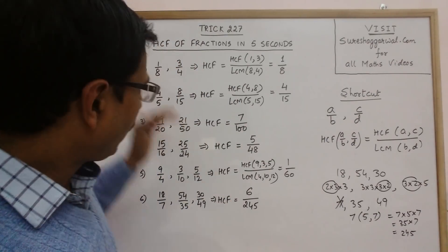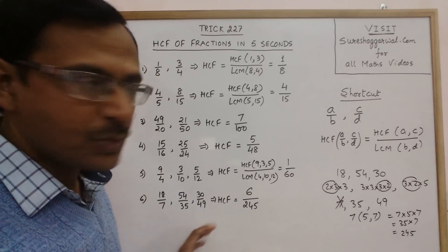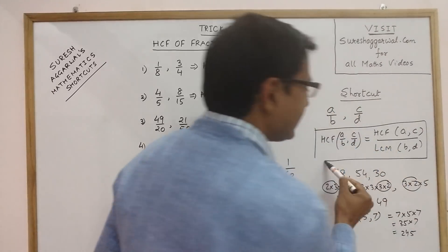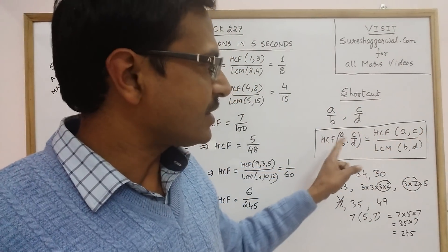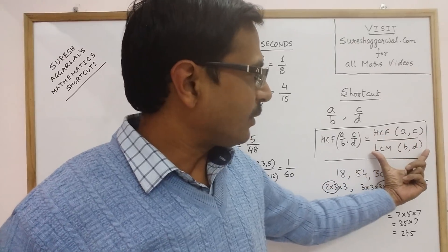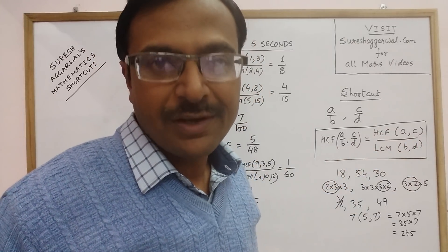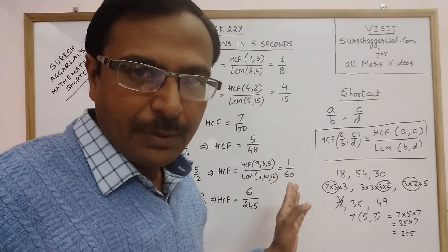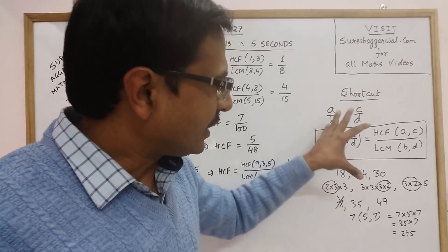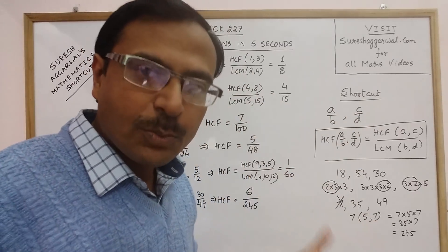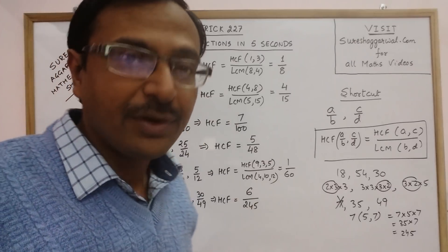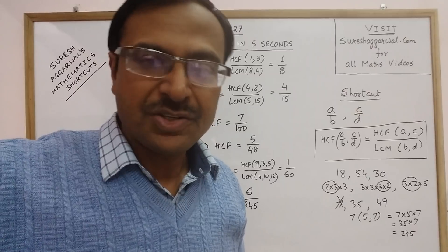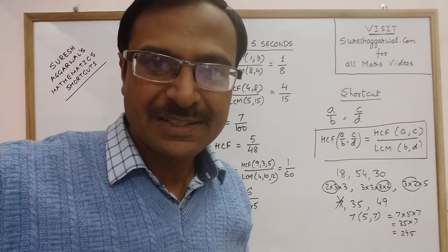So we have found the HCF of all these fractions using the simple concept of finding the HCF of the numerators as the numerator of the answer, and finding the LCM of the denominators as the denominator of the answer. The final answer is 6/245. In our subsequent video, we will understand how to utilize this method to find the LCM of fractions. Till then, keep learning, keep subscribing, and share the videos if you like it. Thank you!